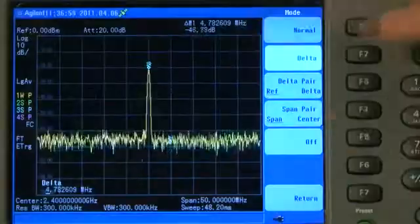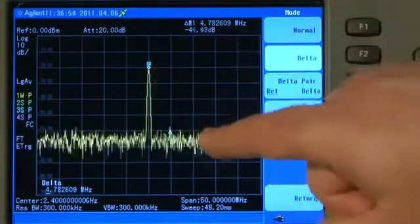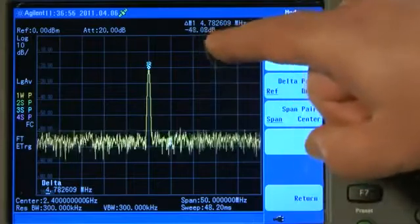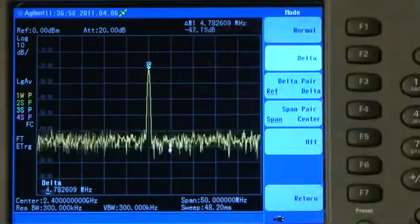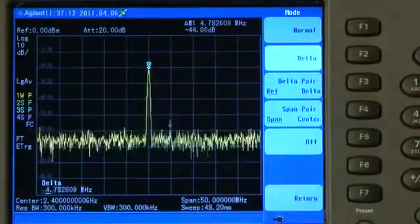And if I turn the knob you will see a second or Delta Marker comes away from the main Marker. And we can see now that for example at a 4.7MHz offset the difference in amplitude is minus 42 or whatever dB. So that is very helpful for measuring relative signal levels between say a main carrier signal and one of its harmonics. Or in this instance a carrier and the noise floor.